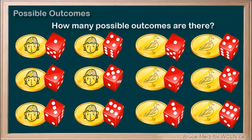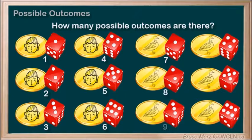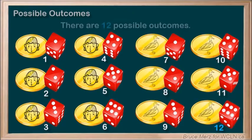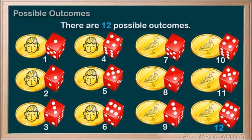So how many possible outcomes do we have? We simply need to count them, and if we do we will get 12. The total number of outcomes for flipping a coin and rolling a die is 12. If you got that, well done!